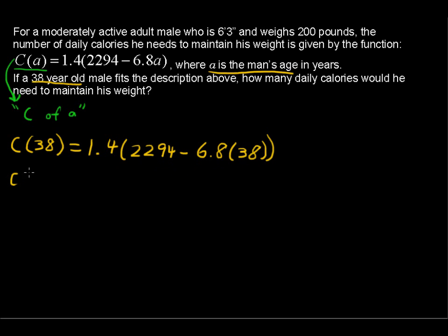So C of 38, or this number of calories, equals 1.4 times 2,294 minus 258.4, that is 6.8 times 38.